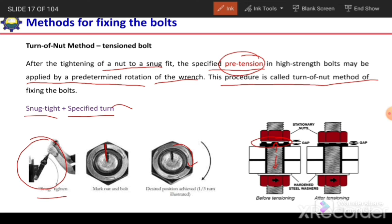But when it is tensioned by the turn-of-nut method, this gap will be reduced. As a result, there will be tension in the bolt. This will indicate that the bolt is in tension.